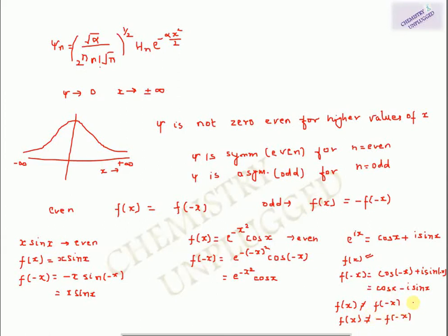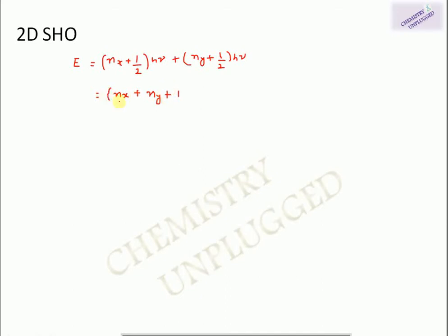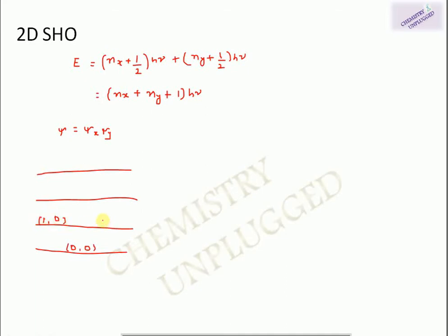Next is the 2D simple harmonic oscillator. The energy value of 2D SHO is E = (nₓ + ½)hν + (nᵧ + ½)hν = (nₓ + nᵧ + 1)hν. The wave function is calculated by multiplying the wave functions for x and y: ψ = ψₓ · ψᵧ. To calculate degeneracy for different values of n: for n = 0 (nₓ = 0, nᵧ = 0), degeneracy = 1.